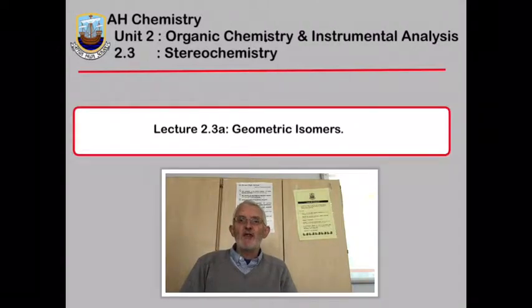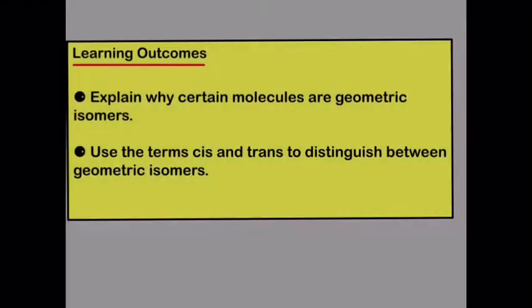In this lecture we're going to look at geometric isomers. By the end of this lecture you'll be able to explain why certain molecules are geometric isomers and use the terms cis and trans to distinguish between geometric isomers.